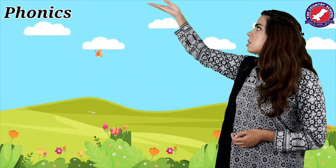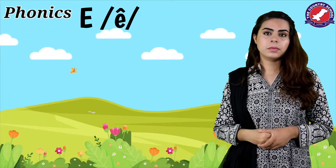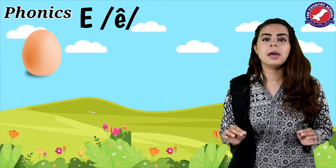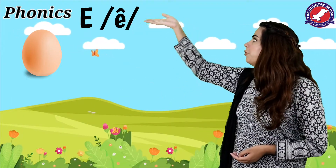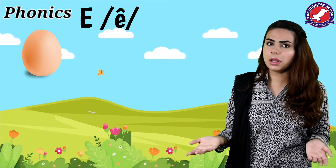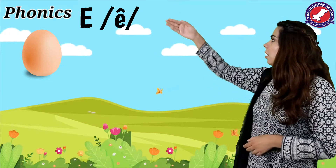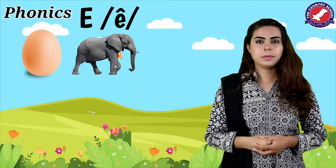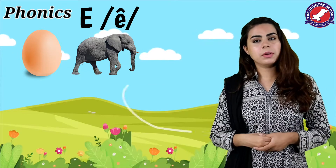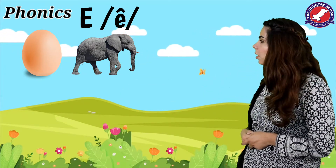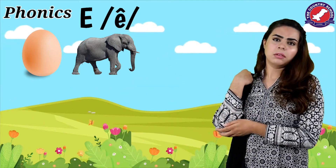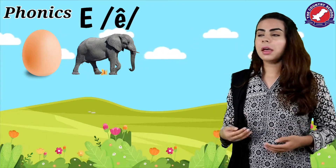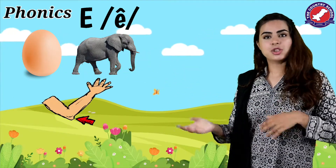Can you guys tell me any word starting from the sound of E? Yes, it's egg. E, egg. Can you name any other object? Great — E, elephant. Elephant. E, elephant. Can you give me any other example? My elbow is paining. What did I just say? Elbow — it's starting from E. E, elbow.